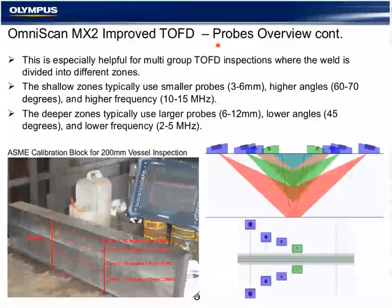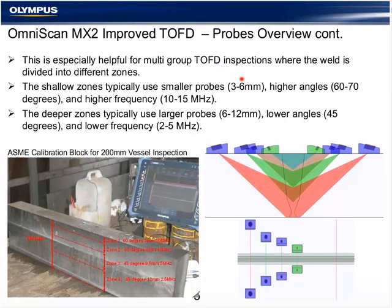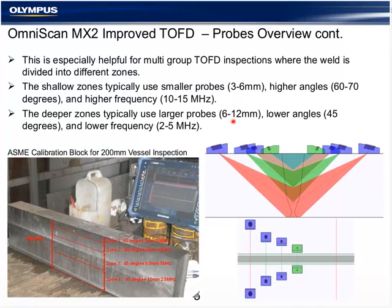The overwhelming majority of TOFD inspections are a single-group TOFD, typically combined with phased array. For thicker components, we use small diameter, high-angle, high-frequency probes for the cap area, which is the most difficult to cover. As zones progress deeper into the material, they become larger in size and use lower frequency and larger diameter probes. This is done through experimentation on the calibration block, but it's fairly predictable.